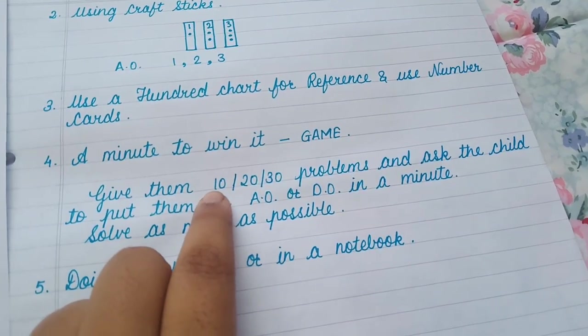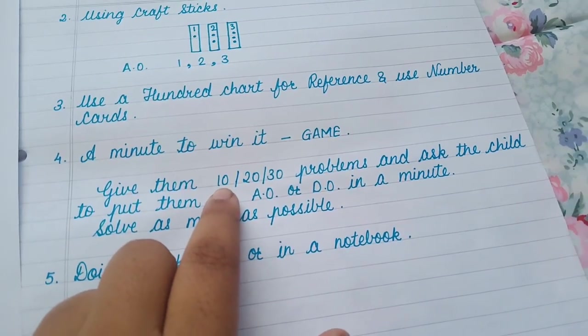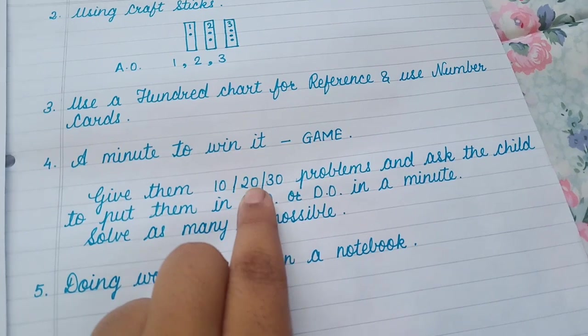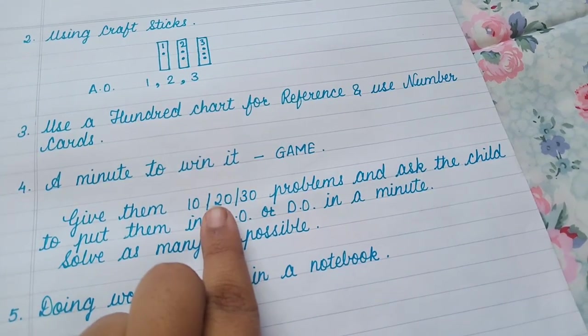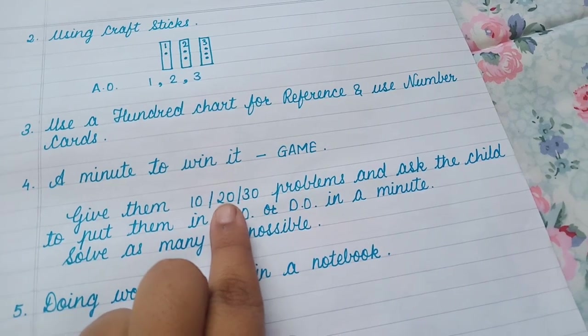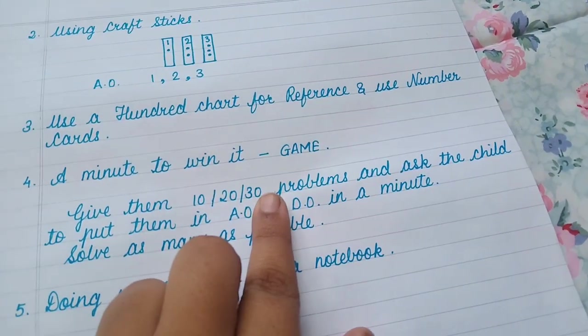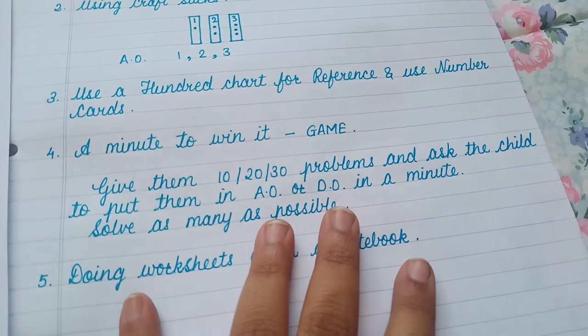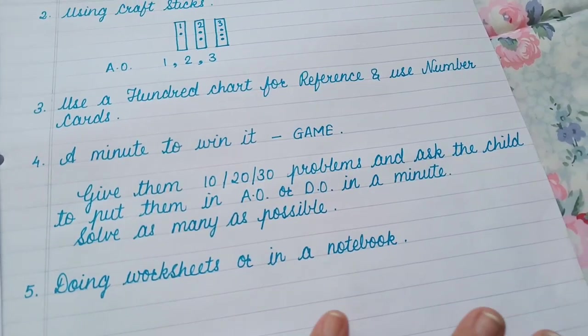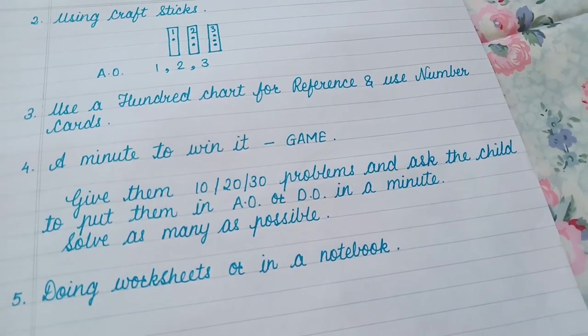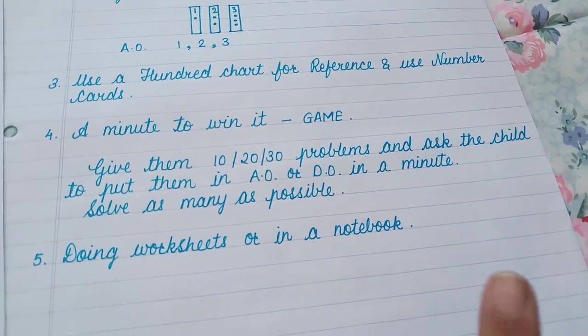So in one minute, the child should be able to do as much as possible to win the game. So if the child is able to complete all 10, very good, then for the next time give them 20 problems to solve in one minute. Now if the child reaches to the point that he can solve all the 20 in one minute, then give them 30 problems. So based on the child's capability as well as the stage he is at in learning ascending and descending order, just tweak this game.